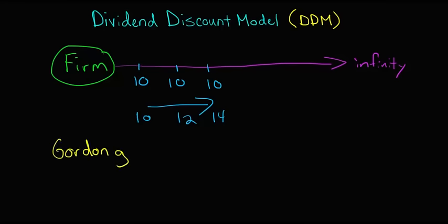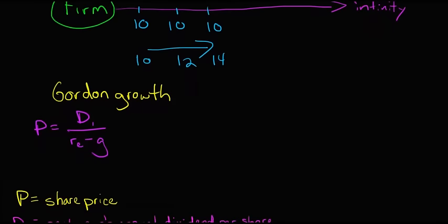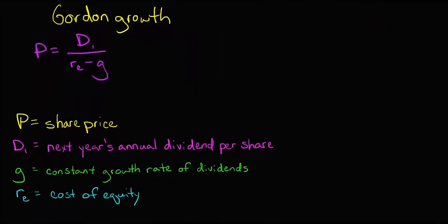The Gordon Growth Model is actually a very simple equation. We have P, the firm's share price, equal to the dividends in the next period, dividend per share on an annual basis in the next period, divided by the cost of equity after subtracting the growth rate that we're expecting for the dividends.